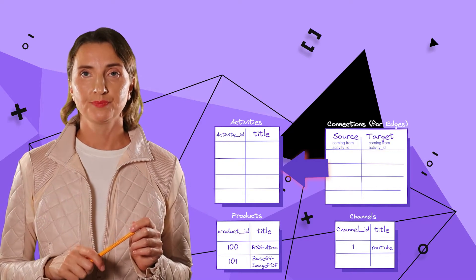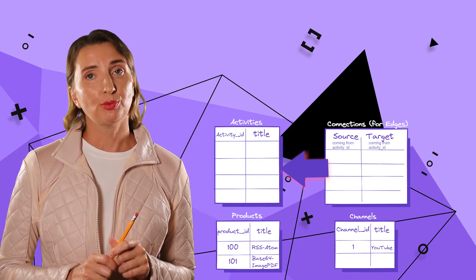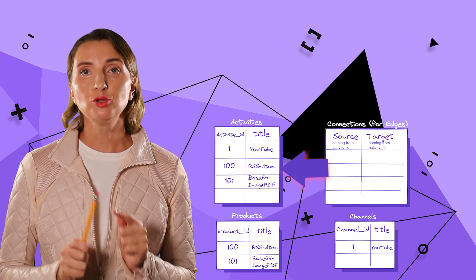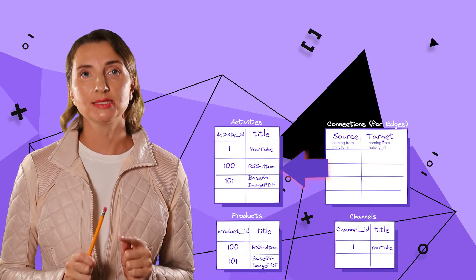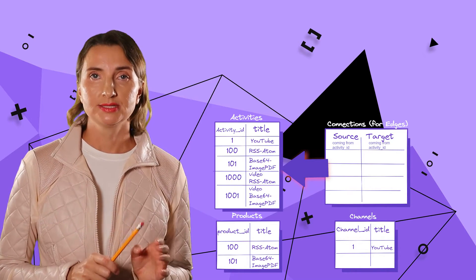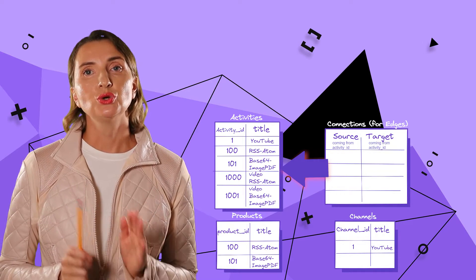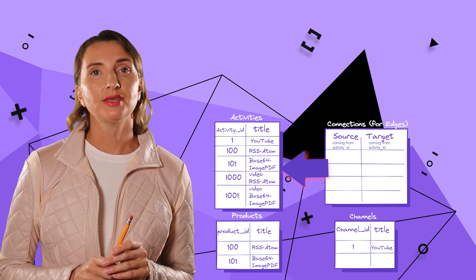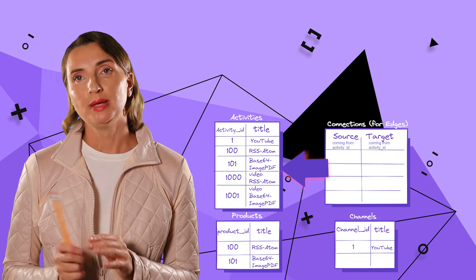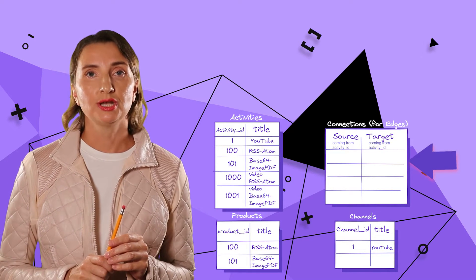Table activities. I know that all of the above channels and products I would want to display on the graph. So I will need to duplicate the channels and products tables content into the activities table. And next, I will add two more activities: Activity ID 1000, title Video RSS Atom, and Activity ID 1001, title Video Base64 Image PDF. From there, let's work on the connections table.